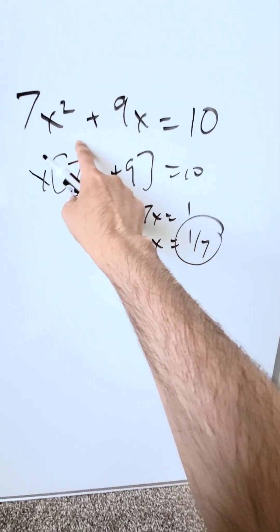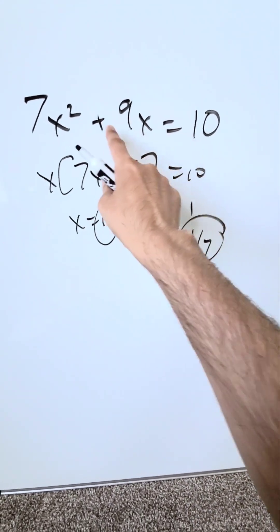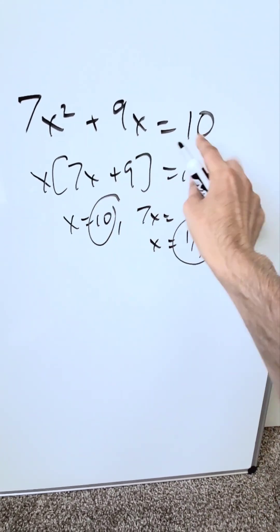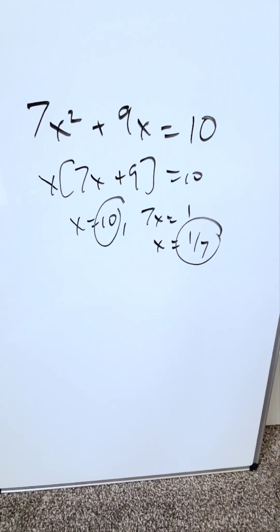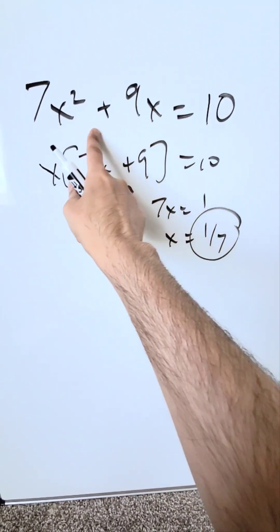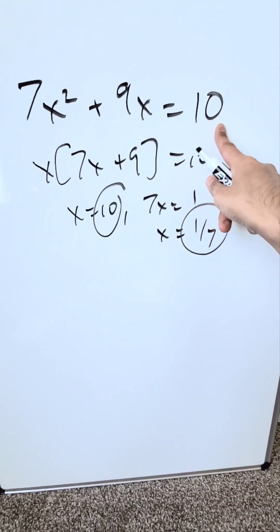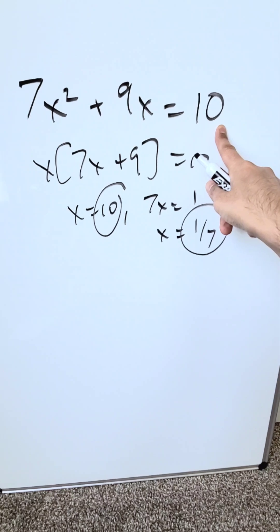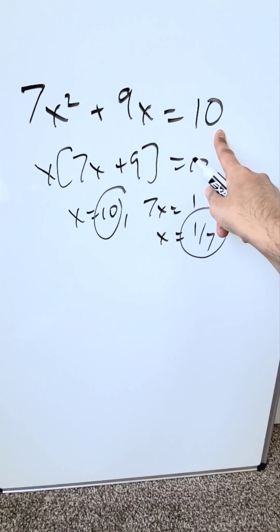If you put both of these into the original equation, it will not equal 10 — the left-hand and right-hand sides will not be equal. This method is wrong because you're missing out the effect of the number 10 in your factorizing process.